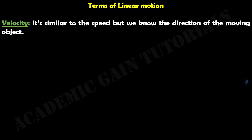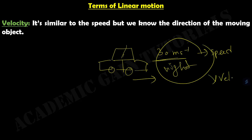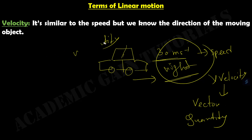The third topic is velocity. It is similar to speed, but we also know the direction of the moving object. For example, a car moving at 30 meters per second — that information alone is speed. But if we say the car is moving to the right at 30 meters per second, the whole information is known as velocity. Speed is a scalar quantity, while velocity is a vector quantity.